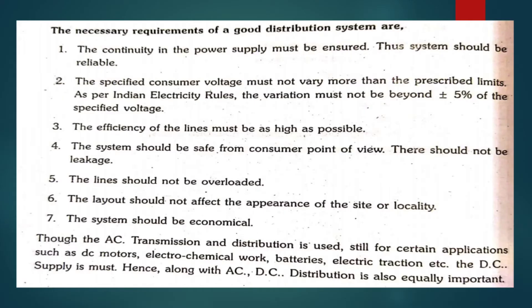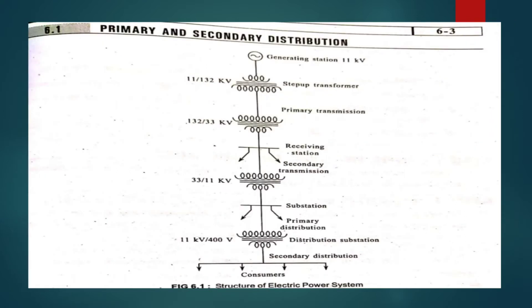We can provide good distribution. We can evaluate the distribution to the people. We can evaluate the efficiency to be as high as possible. The voltage variation should be plus or minus 5 percent, and the line should not be overloaded.